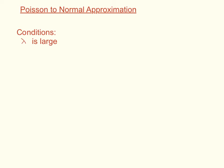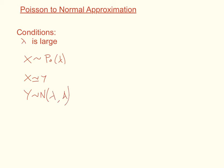In this video we're going to be looking at how we can approximate the Poisson distribution to a normal distribution. The condition for this is where lambda is large. So if x has a Poisson distribution of lambda, we say that x is approximately y, where y has a normal distribution with mean lambda and variance lambda. Remember that lambda is both the mean and the variance — a key condition of the Poisson distribution is that the mean and variance are equal.